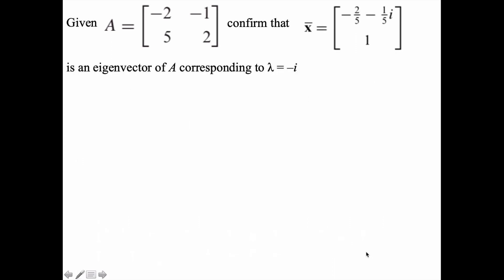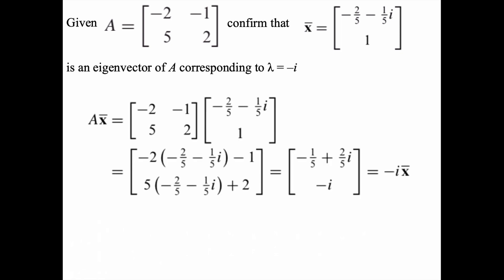Does that actually work out? We like to confirm that A times x bar really does result in lambda times x bar. In this case, lambda equals negative i. It doesn't take much work to show that's exactly what happens. If you take the two by two matrix we started with originally, multiply it by that new eigenvector family that has the negative in the middle, complex conjugate, you will notice that you get negative i times x bar.